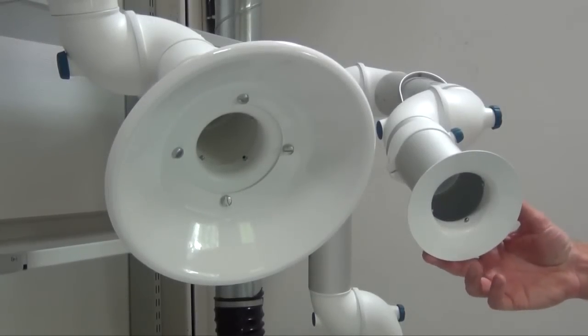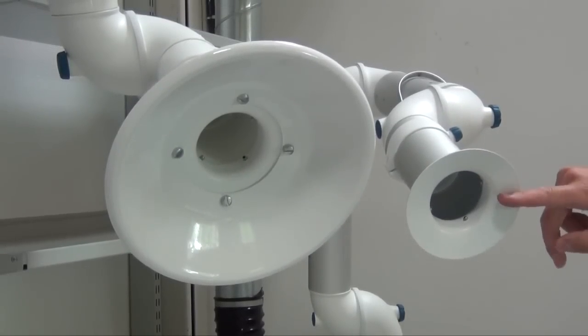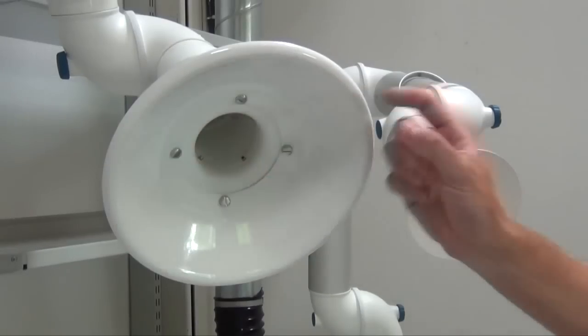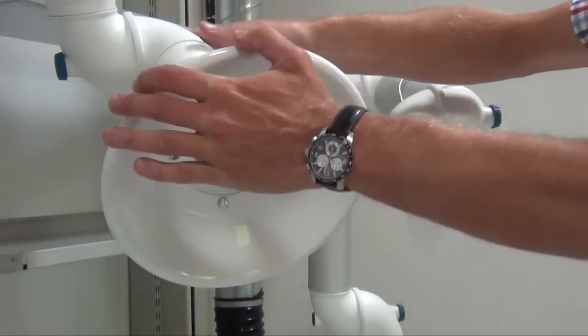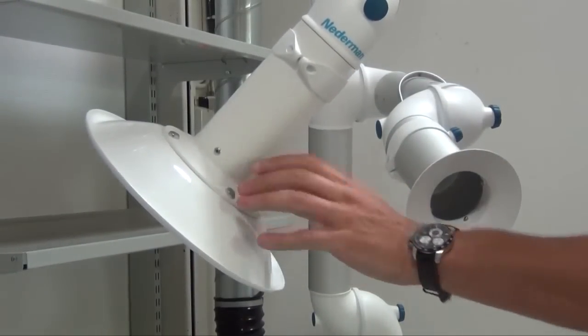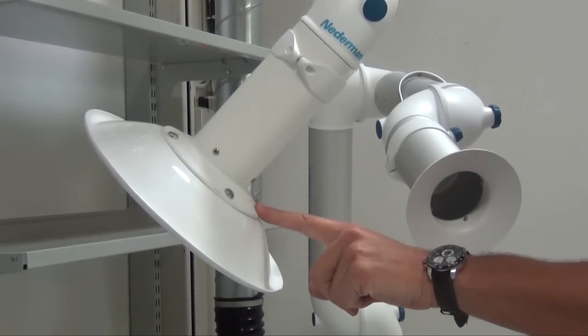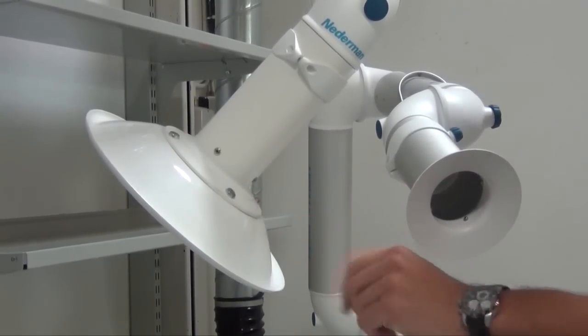The extraction arm is always delivered with a small multipurpose hood like that. As an accessory you can always get a bigger metal hood like this. And actually it is installed with four bolts on top of the hood that always comes with the arm.